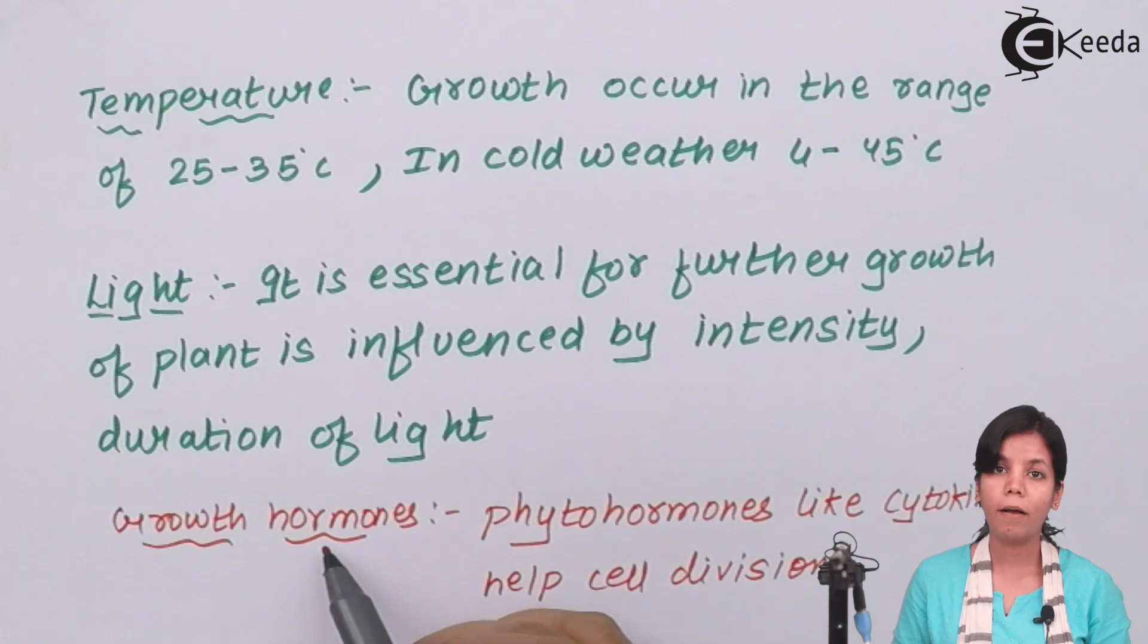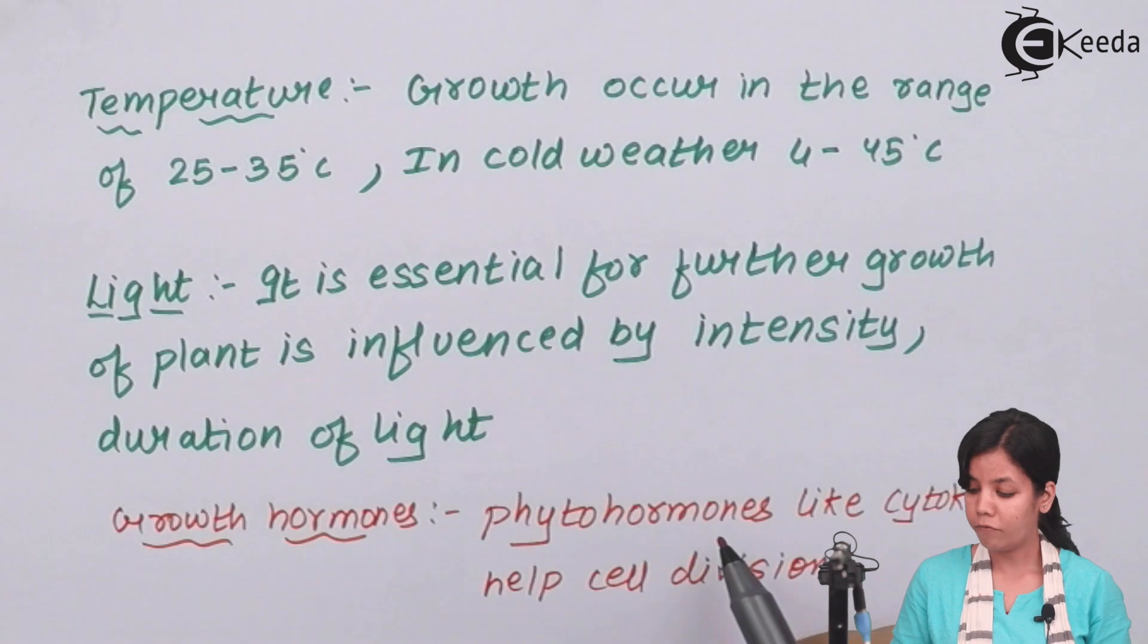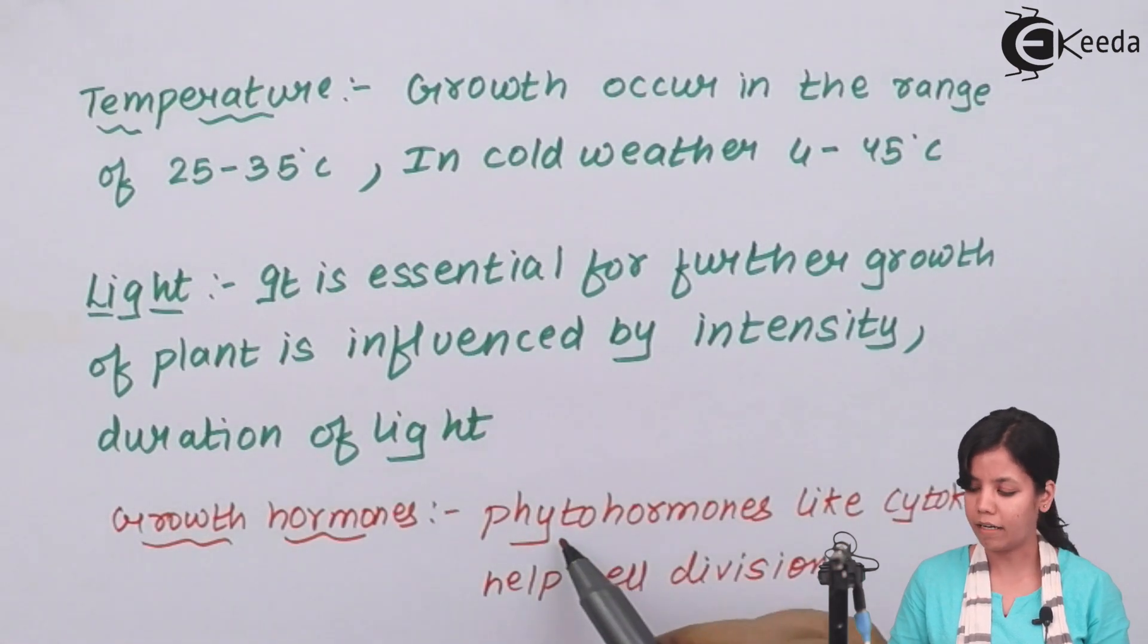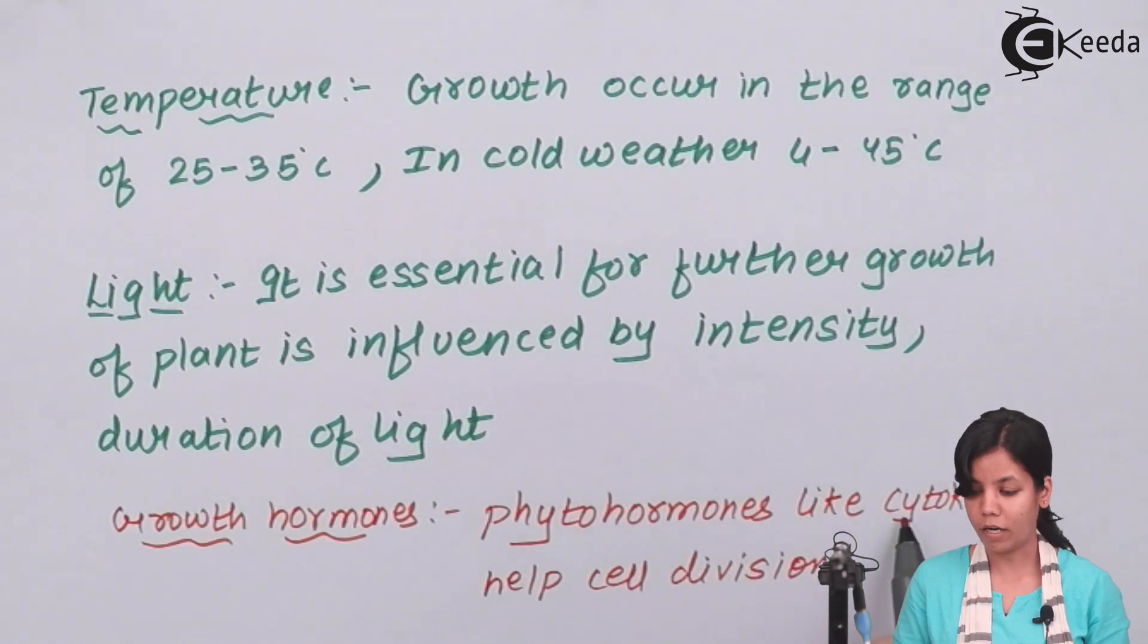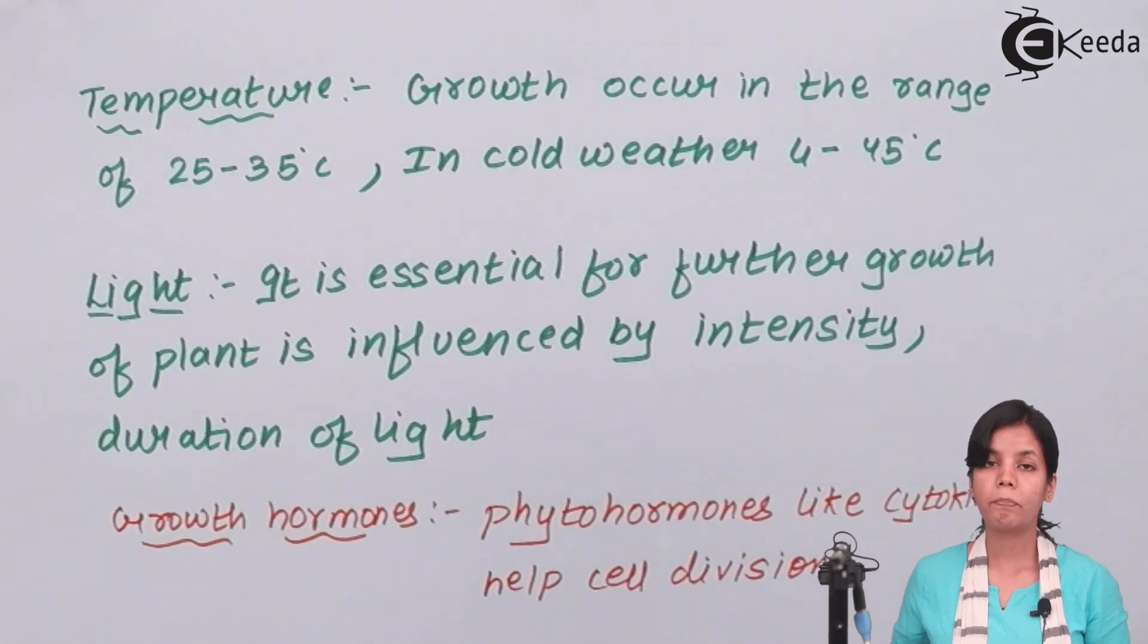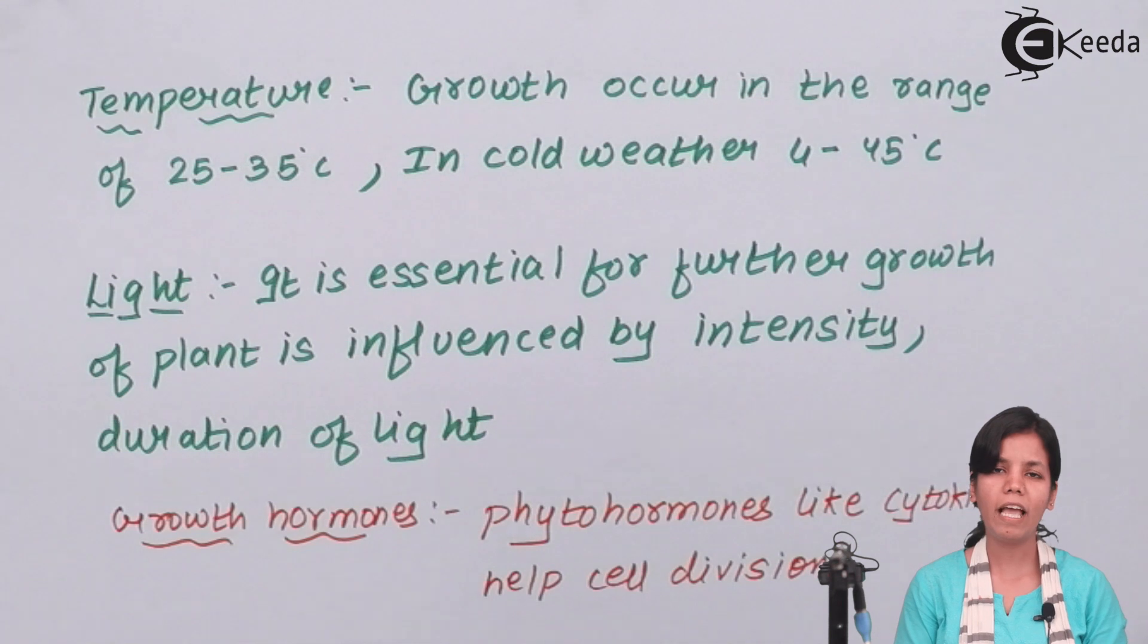Lastly growth hormones or plant hormones. Growth hormones are enzymes that influence plant activity. Phytohormones, why they are called phytohormones? Phyto means plant and hormones are enzymes that are produced in plants. Phytohormones like cytokinin help in cell division. So students, in this part of the chapter we have studied the various factors that affect plant growth. I hope you all are clear about these factors and the way they affect plant growth. Thank you.